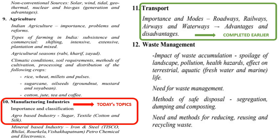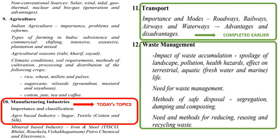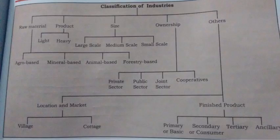In manufacturing industries, we'll be looking at the first two topics: importance and classification of industry, along with the first half which covers agro-based industries — including sugar industry, textile industry, cotton and silk. So sugar, cotton, and silk are the three major agro-based industries, along with the classification and importance of industry.